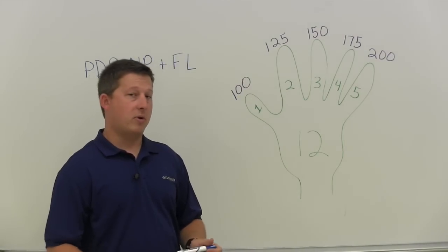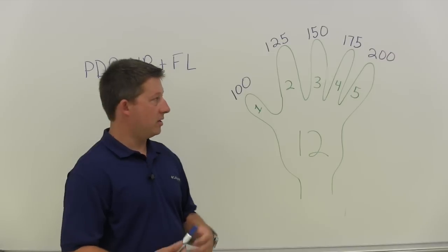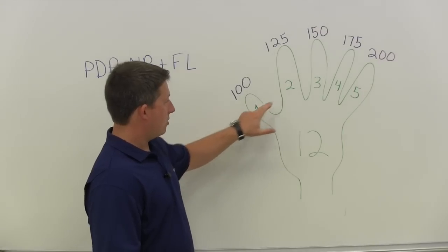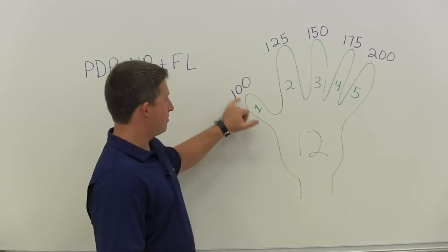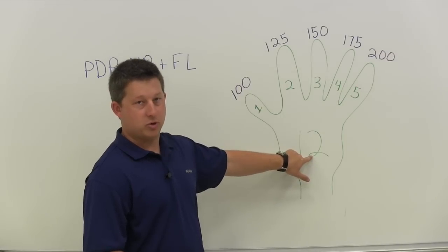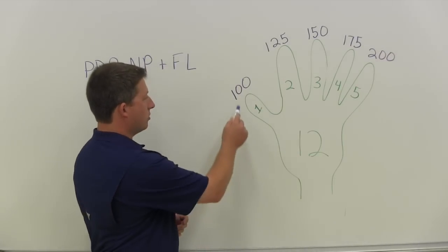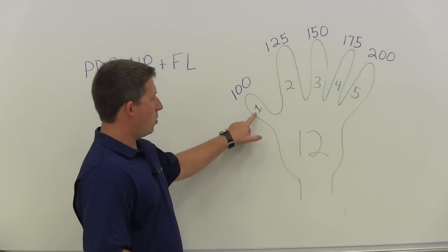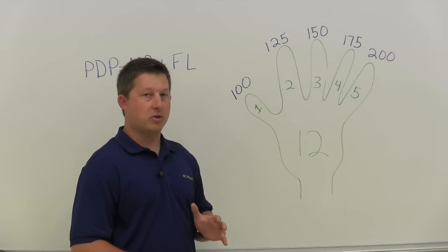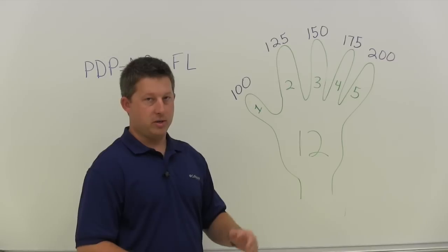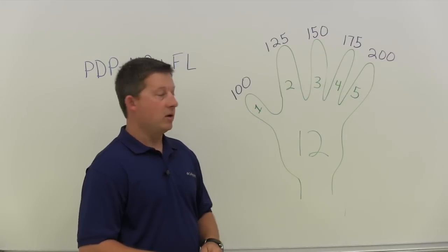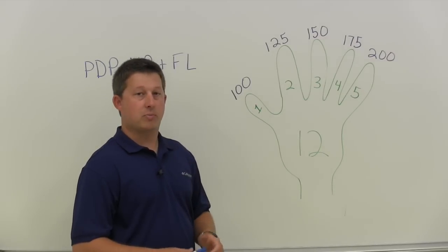So how it works: you determine what gallonage you want your nozzle at. Say you're going to flow 100 gallons per minute — you use the multiplier on the thumb because it's associated with 100, and you multiply it by the number in the center of the palm, which is 12. So 1 times 12 is 12, giving you 12 PSI friction loss per 100 feet of hose. If you're using 200 feet of hose, you'll have 12 plus 12, which is 24 PSI total friction loss.